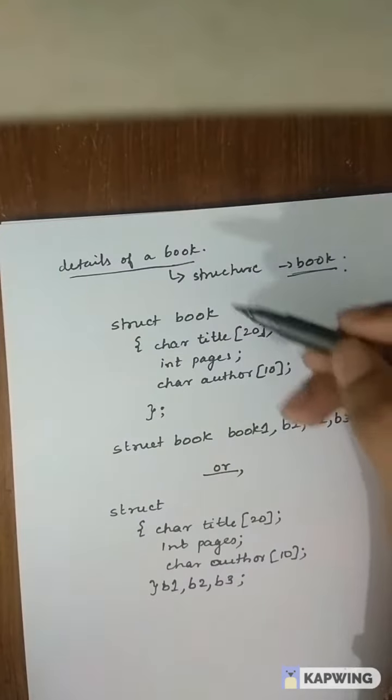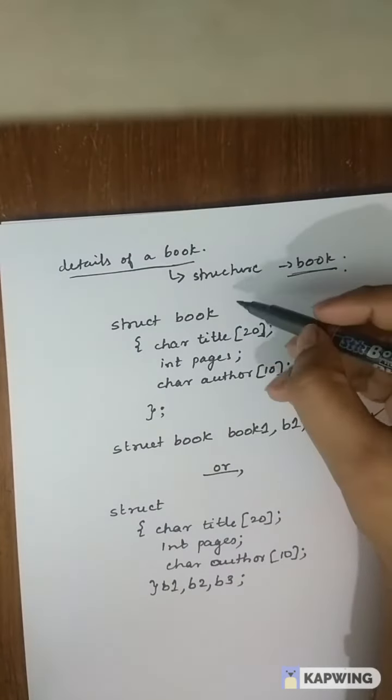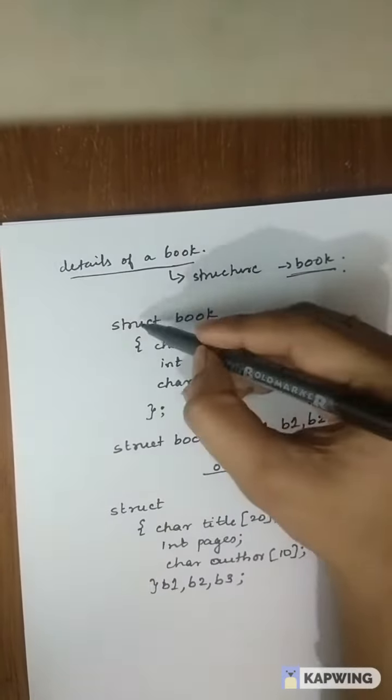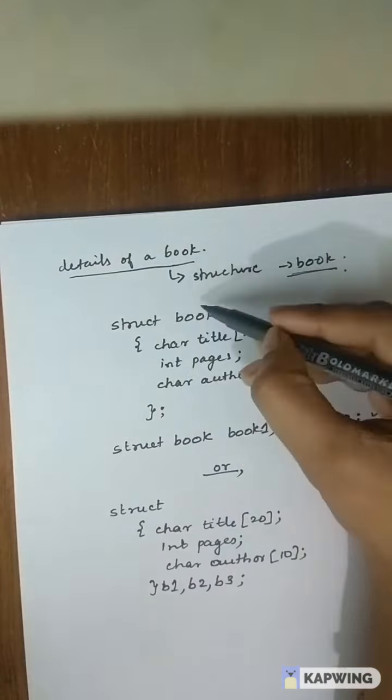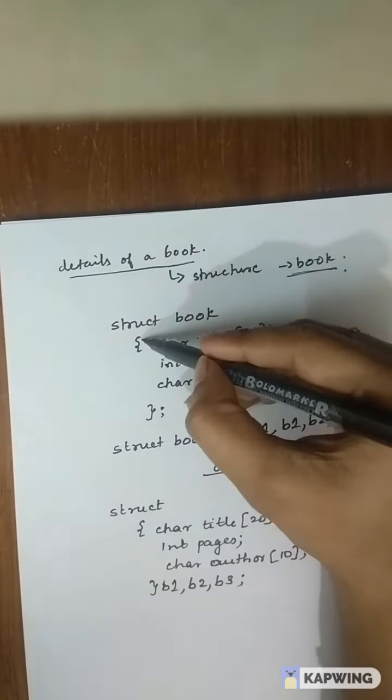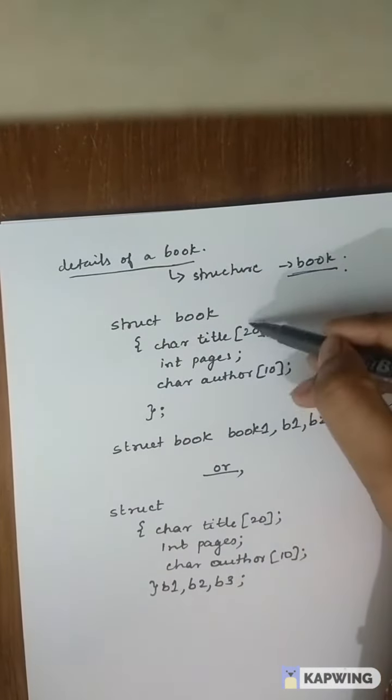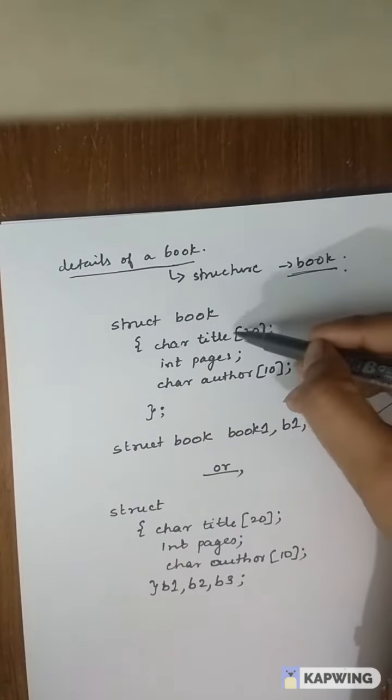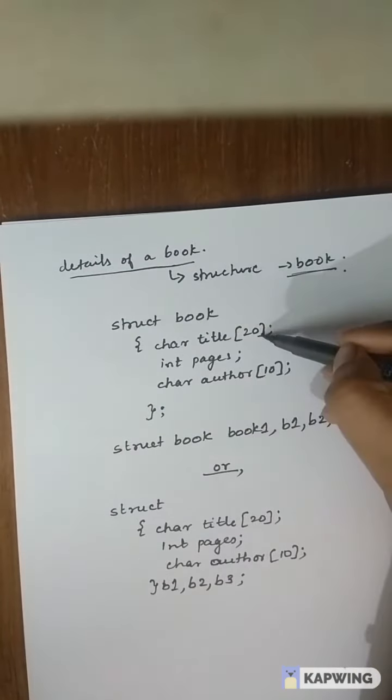How will I declare or define a structure called book. First, I will put struct, then the tag name, opening the braces and grouping together the variables. The first one is the title which is a group of letters. So, char of size 20.